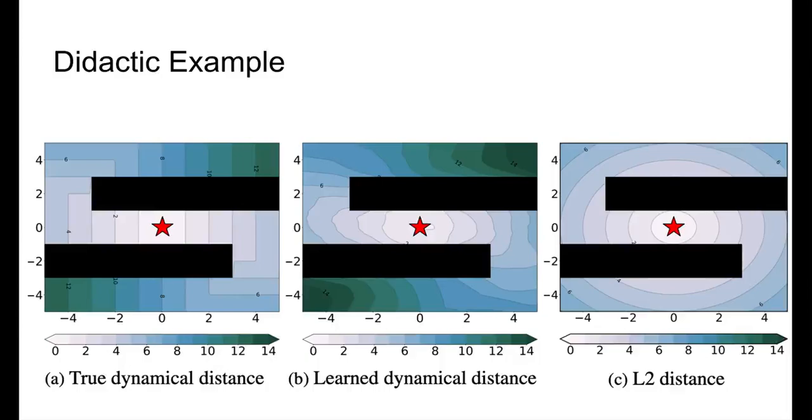Here's a concrete example of what the dynamical distances look like in a 2D maze environment. The red star in the middle presents a goal state, and the heatmap denotes the estimated distance from each point to that goal. We can see that DDL learns to accurately estimate the shape of the ground-truth dynamical distances.